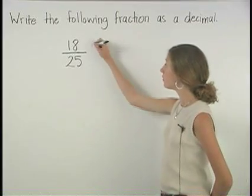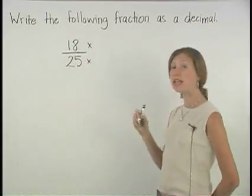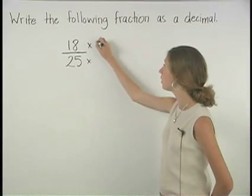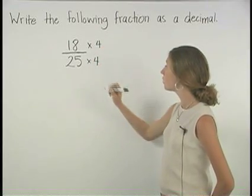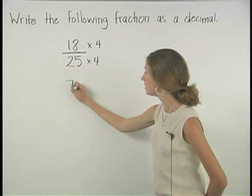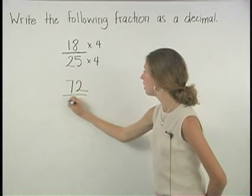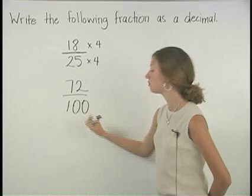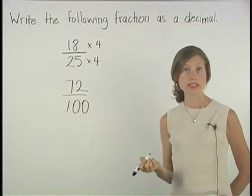Notice that if we multiply the numerator and the denominator of 18 25ths by 4, we get the equivalent fraction 72 hundredths, which we can now write as a decimal.